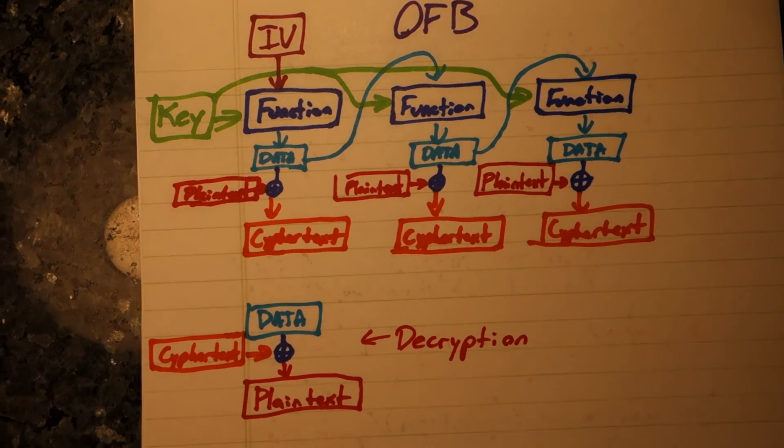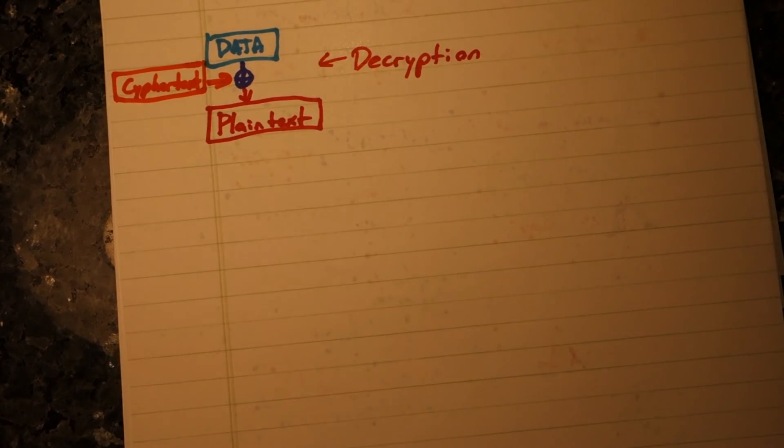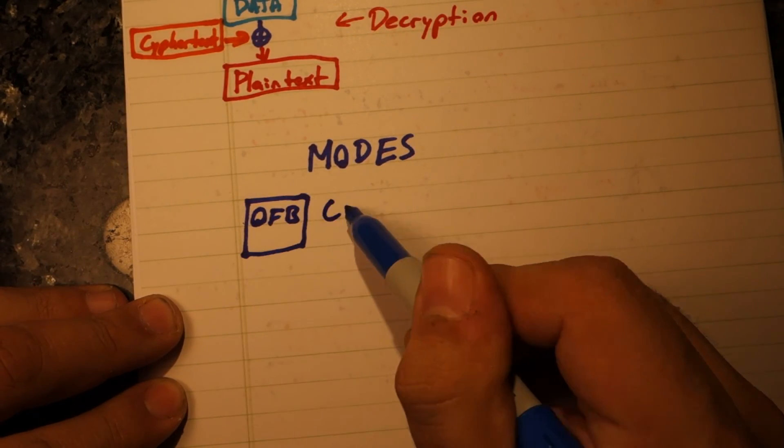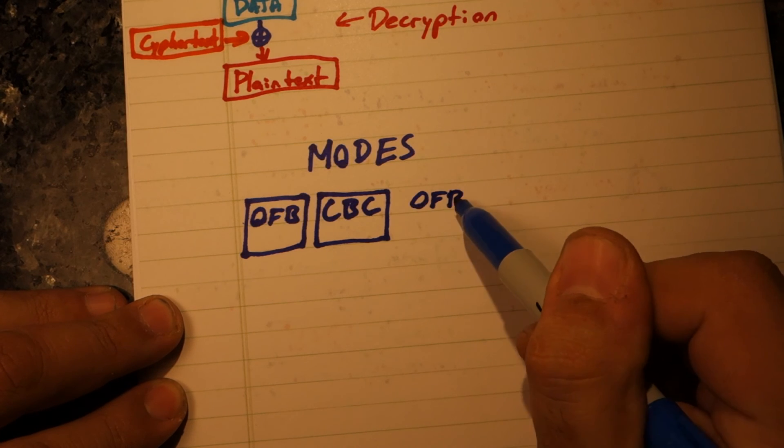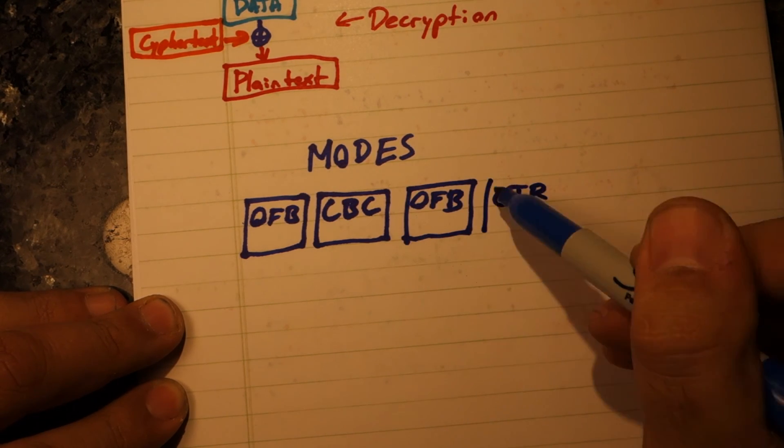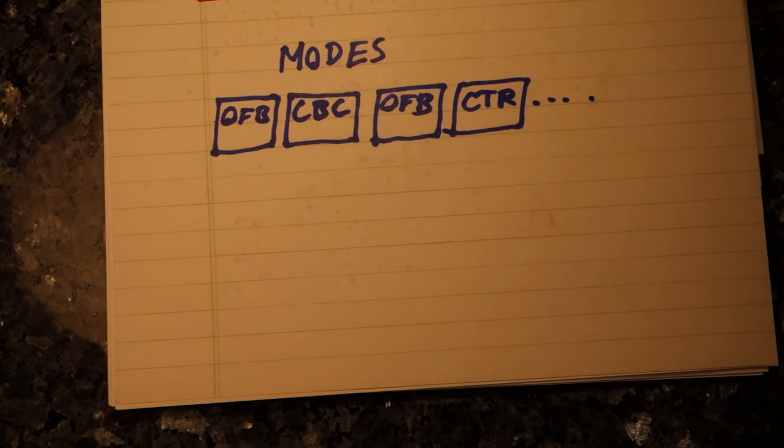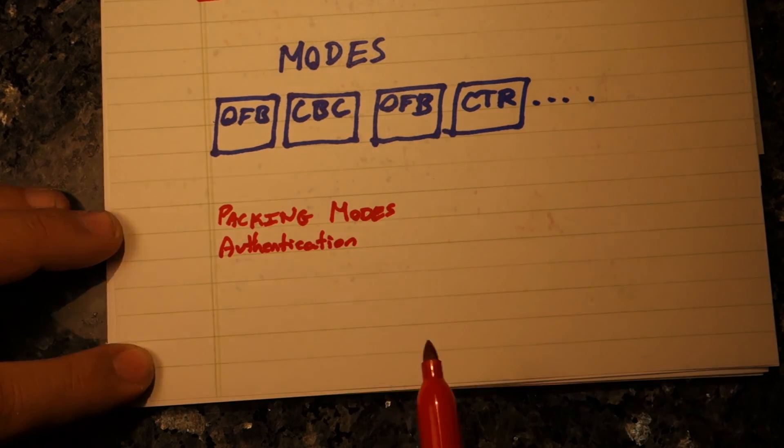There are many other methods like this that differ in how blocks are chained and how the input vector is used, such as cipher feedback and cipher block chaining and counter mode. But we don't need to go into those now. Now, there's a whole lot more we could go into, but I think this is a good start.